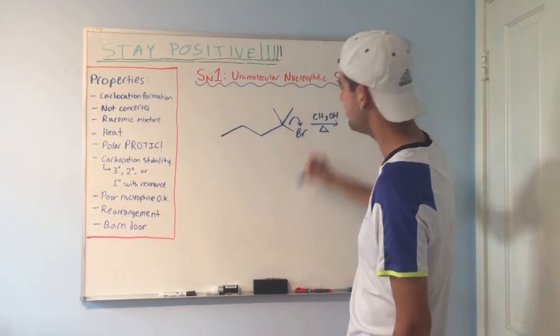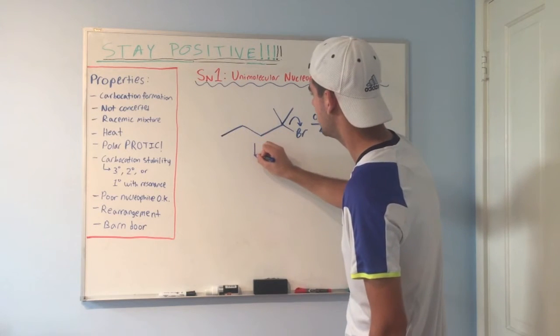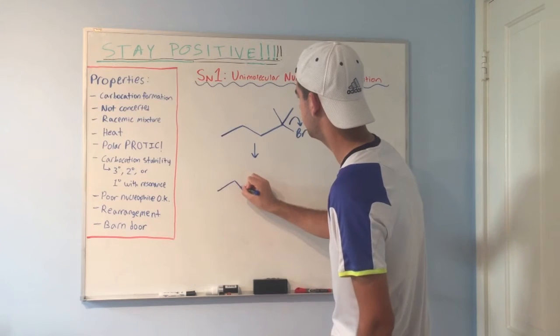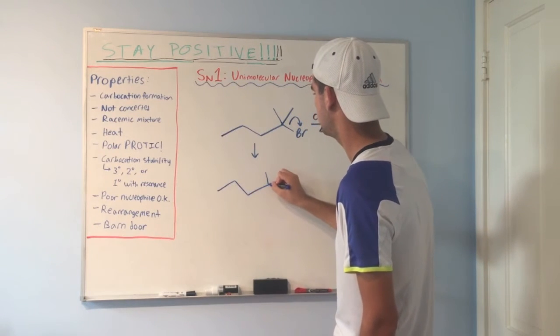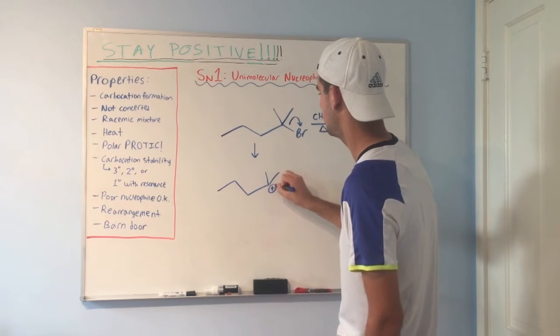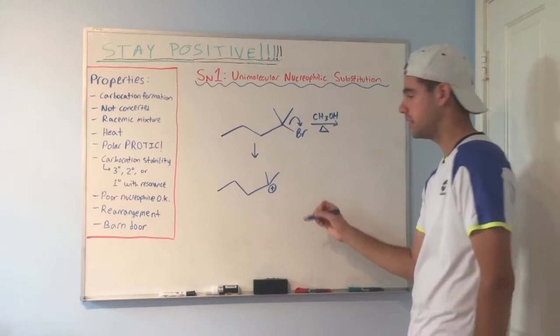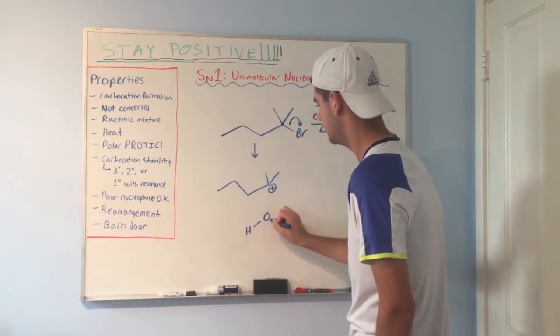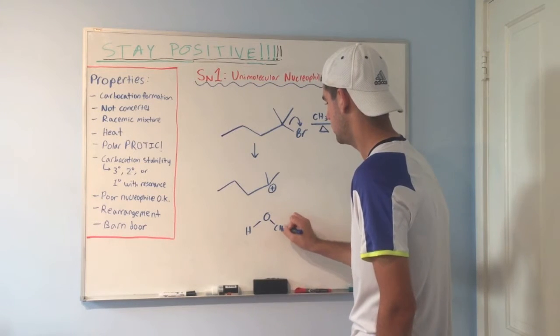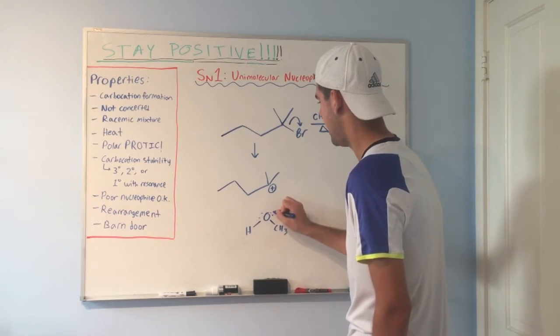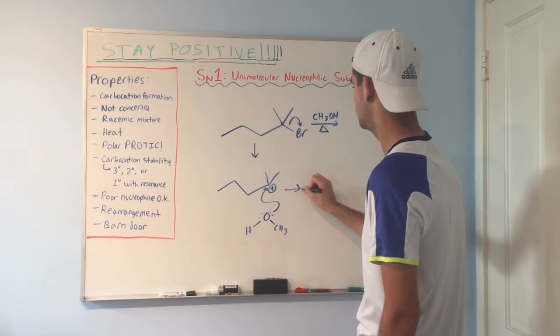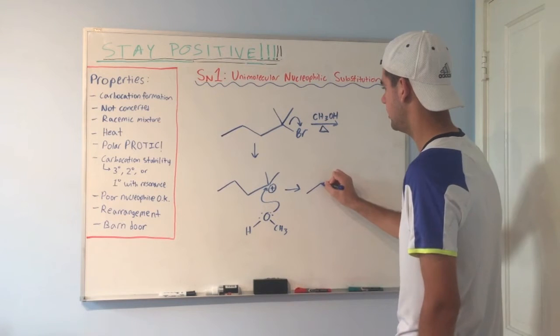First things first, leaving group leaves. So that forms a carbocation at this spot right here. So that's just waiting for a nucleophile to attack. So that methanol is going to come in and attack at the carbocation position. And I have something that looks like this.